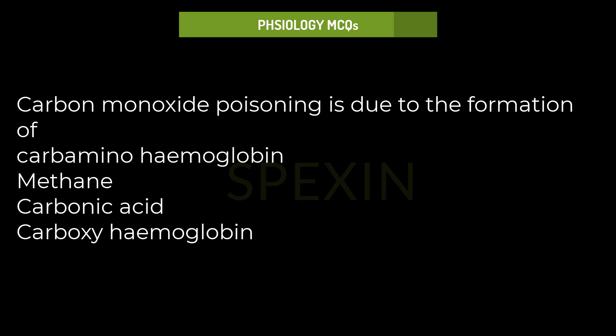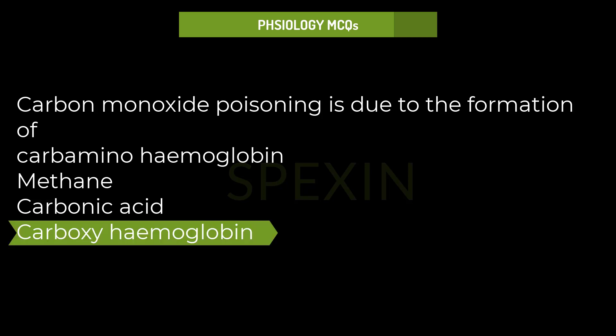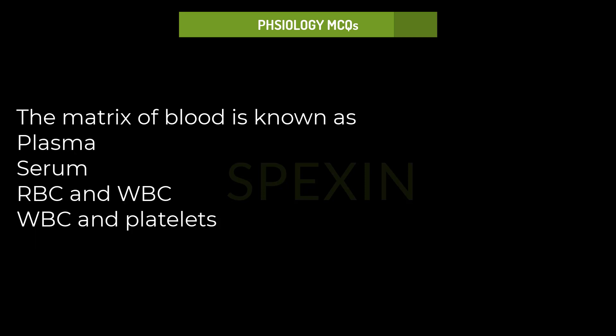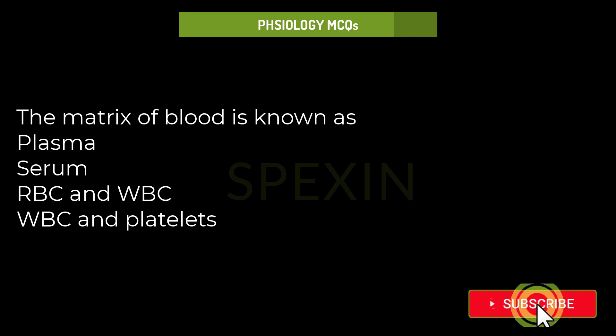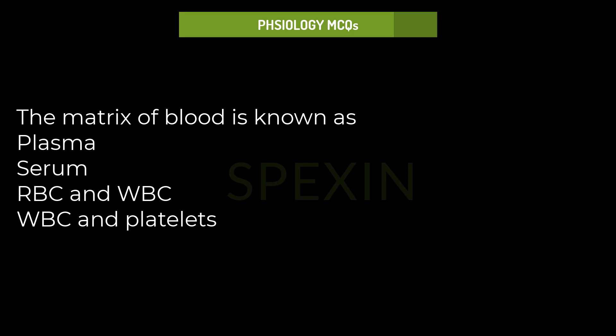Carbon monoxide poisoning is due to the formation of: Carbaminohemoglobin, Methane, Carbonic acid, Carboxyhemoglobin. Correct answer: Carboxyhemoglobin.